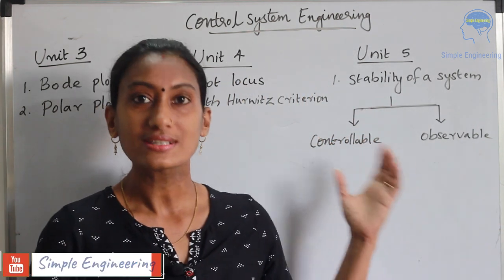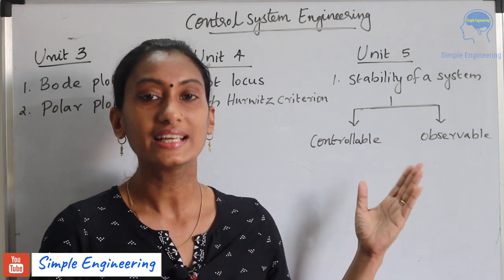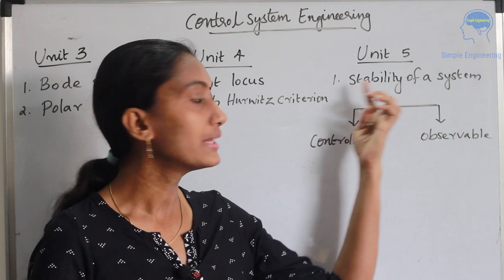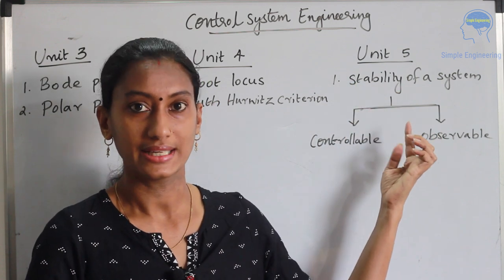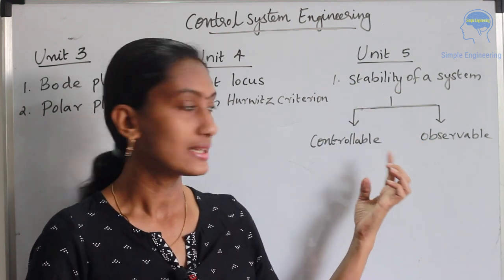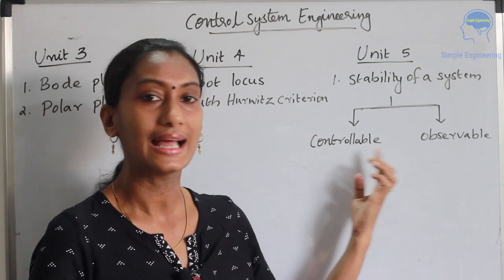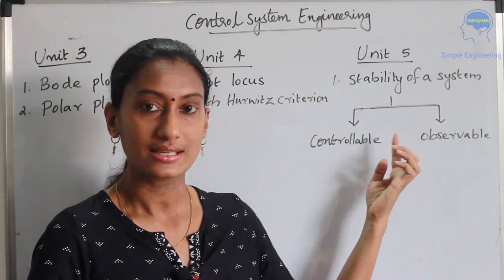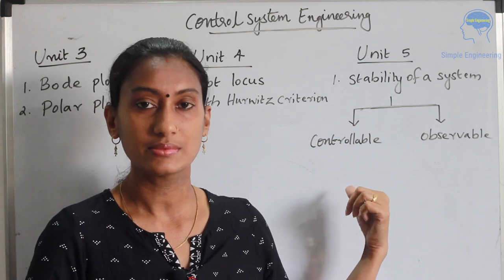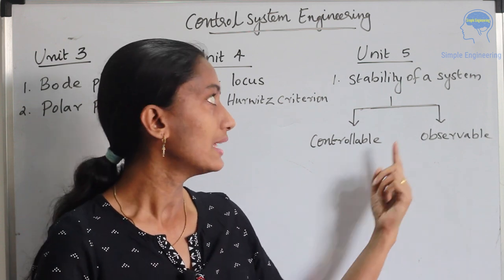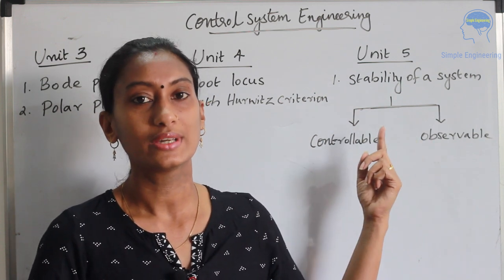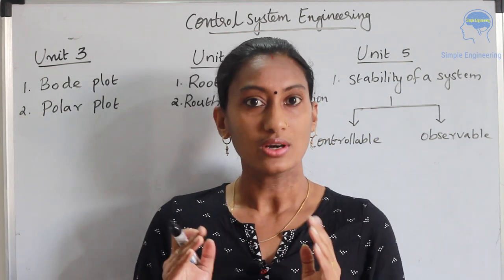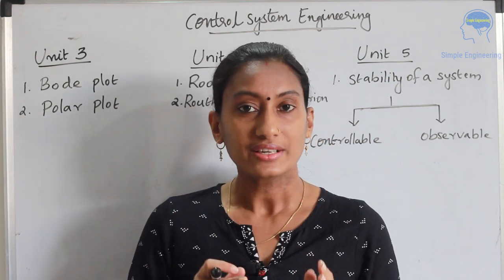In unit 5, in most question papers, questions are repeatedly asked about the stability of a system. For that, you have two types: the system can be observable and controllable. So you have to check whether the system is controllable and observable — this is mainly asked in unit 5 questions.